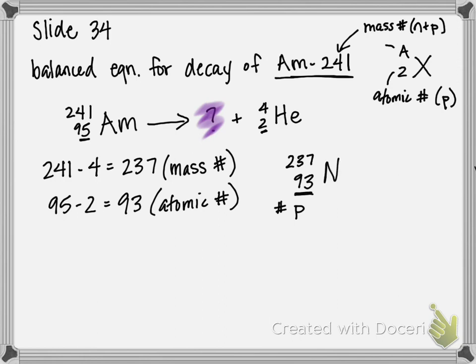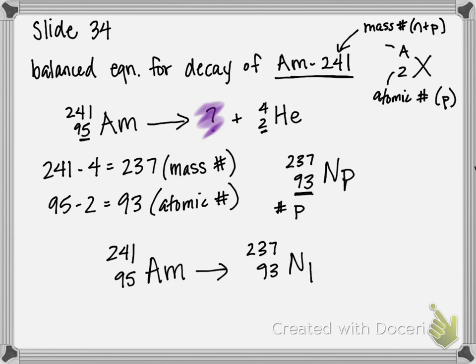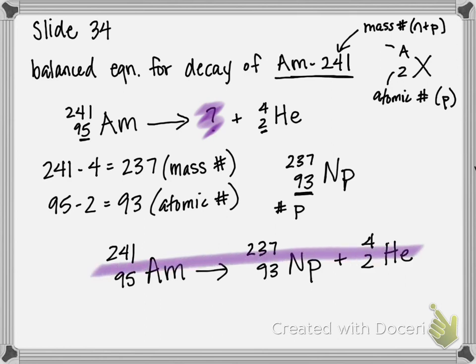So Np goes into our equation, and our completed equation reads: 241 over 95 americium, when it undergoes alpha decay, forms 237 over 93 neptunium, plus an alpha particle which is 4 over 2 helium. And that is your final answer.